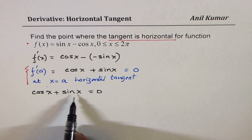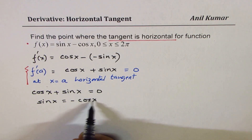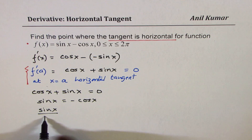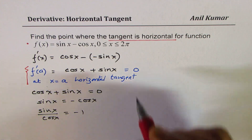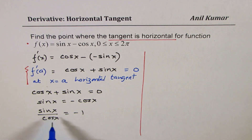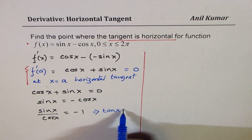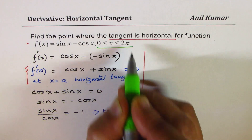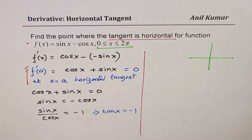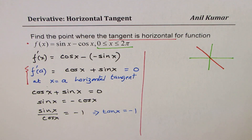That's what we mean, so let's solve for x. We have sin x = −cos x. Dividing by cos x, we get sin x / cos x = −1. This is tan x, so what we get is tan x = −1.